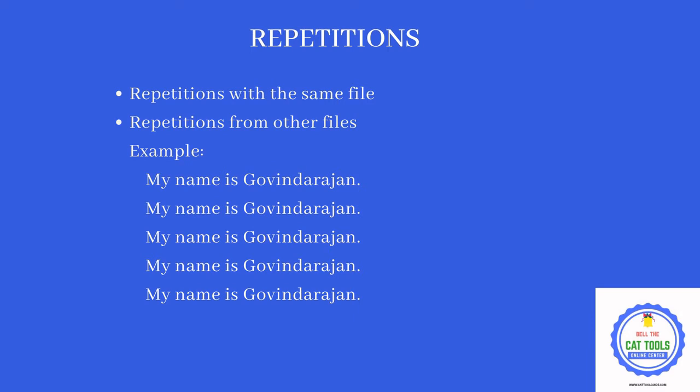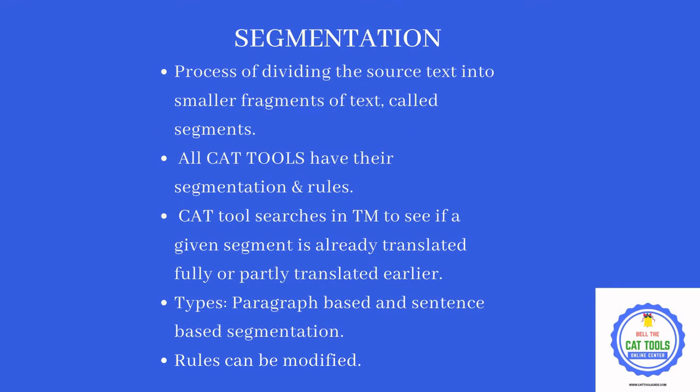If you translate 'My name is Govindarajan' in the first file, it will be automatically filled into the second, third, and fourth files. This saves the typing effort, energy, and time — which is one of the main advantages of any CAT tool. When you translate a paragraph, it will be segmented into segments. A segment can be one word or many words, but it will be subdivided into smaller segments. All CAT tools have their own segmentation rules.